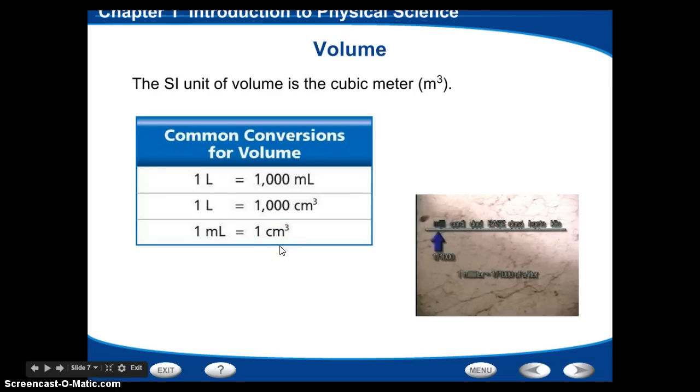So it's really important to understand how those two things are related, because if it's a milliliter, that means that we're usually measuring a liquid. If it's a cubic centimeter, that usually means it's a solid, a regular solid that we can put a ruler up to.